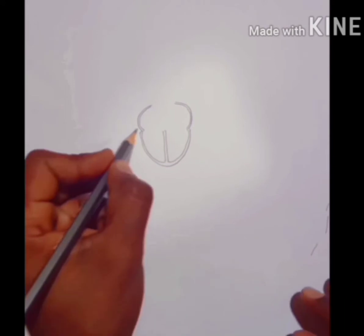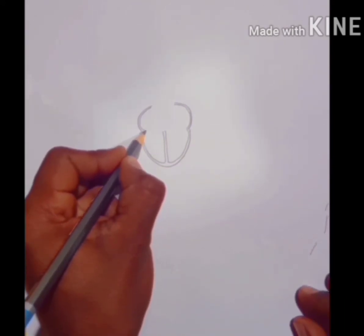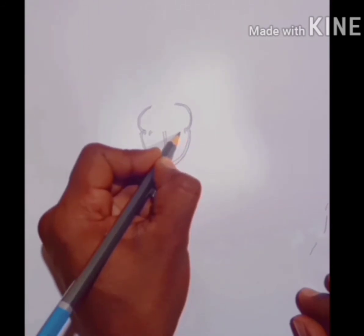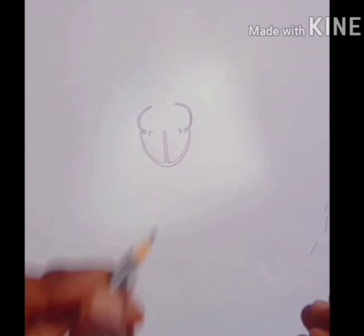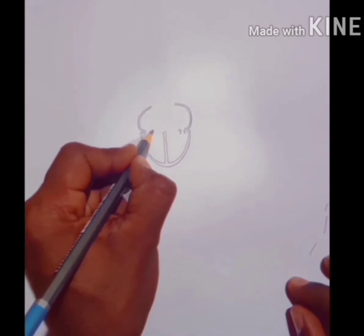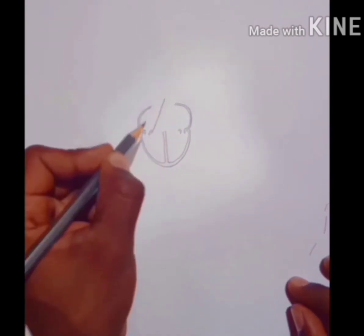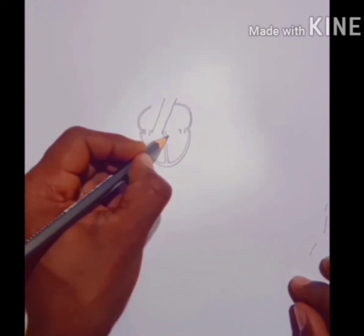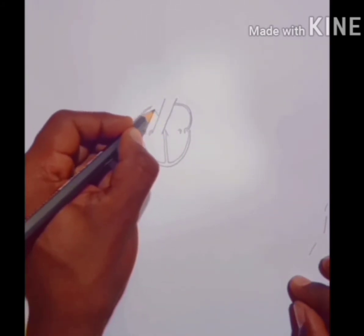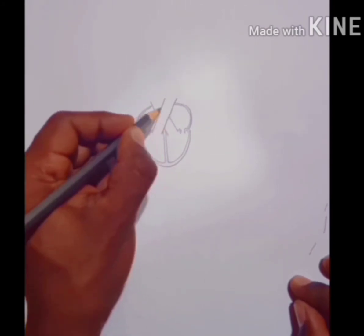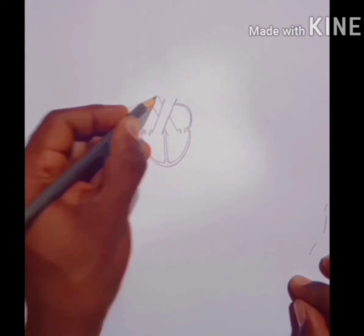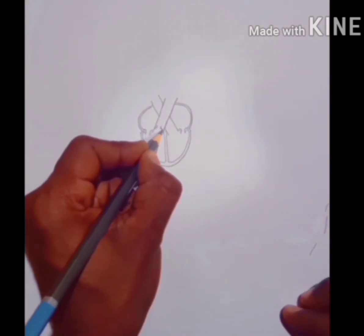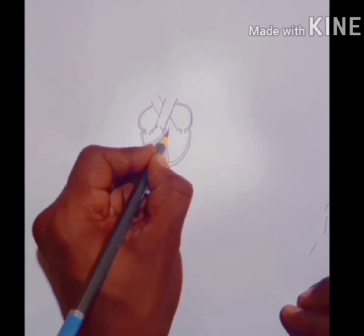And this is the chamber of the left atrium. Now drawing some valves. This is the tricuspid valve. This is the mitral valve. Now drawing the pulmonary artery arising from the right ventricle. Then drawing the vessel of the systemic aorta. Inside this vessel also drawing valves. This is the pulmonary valve. This is the aortic valve.